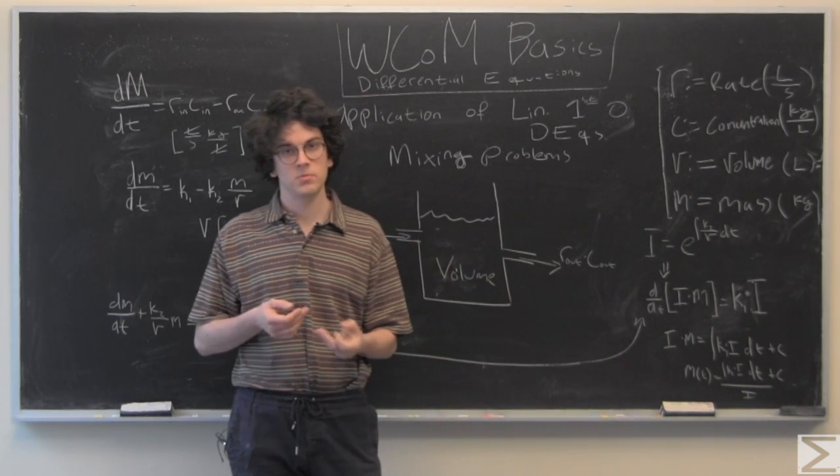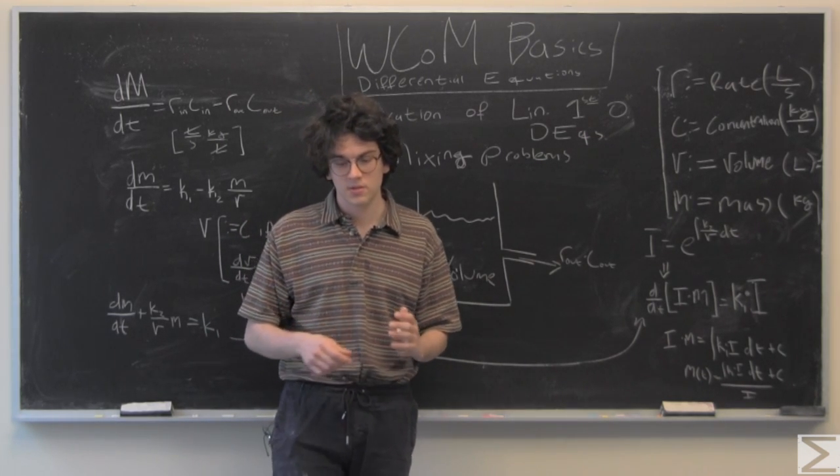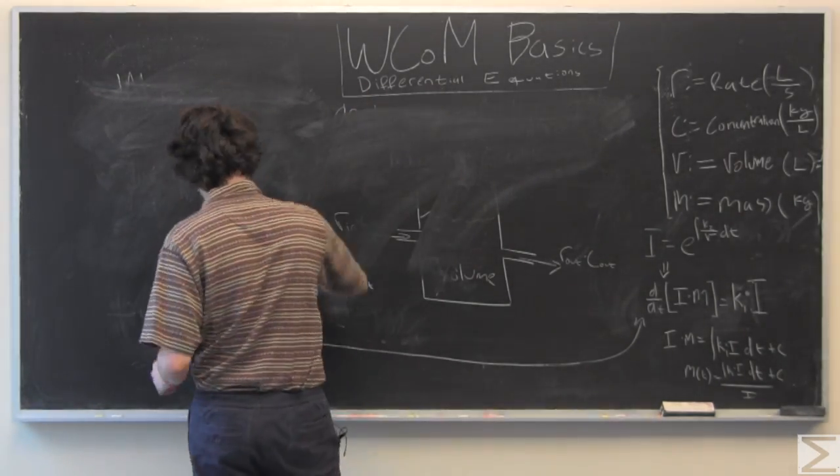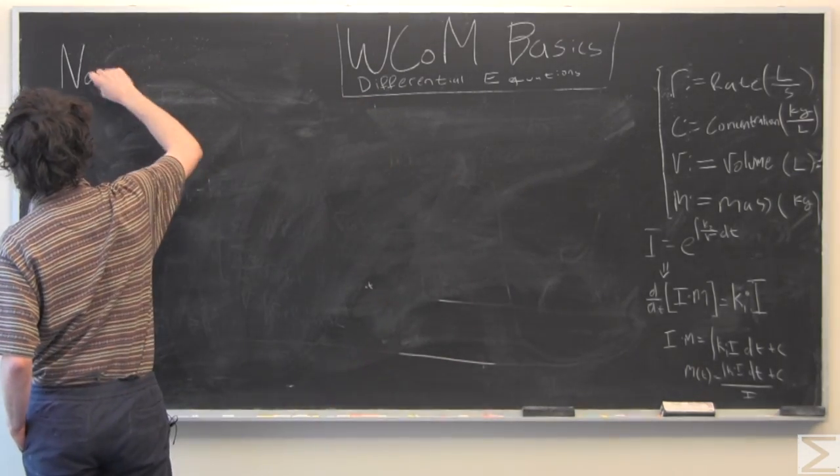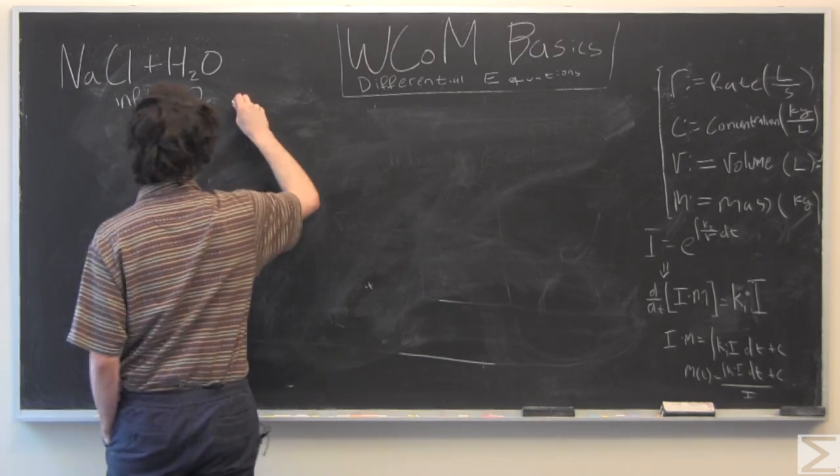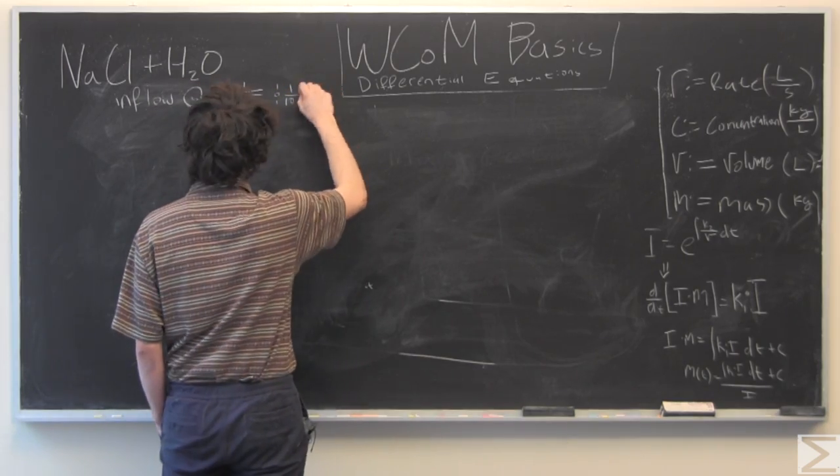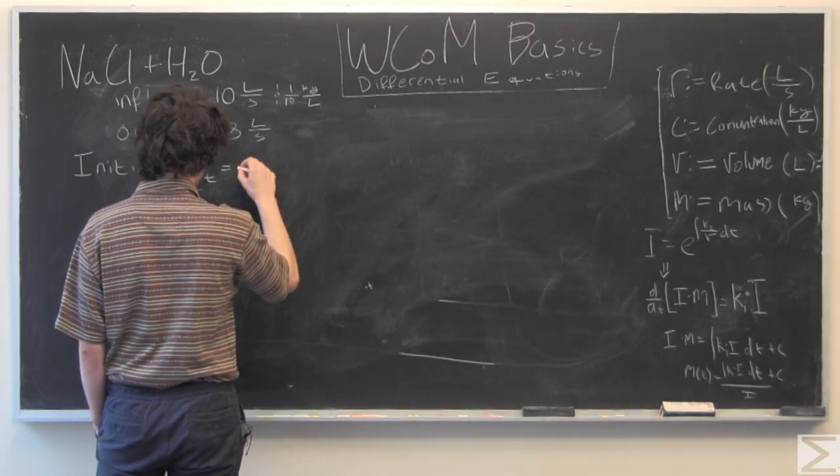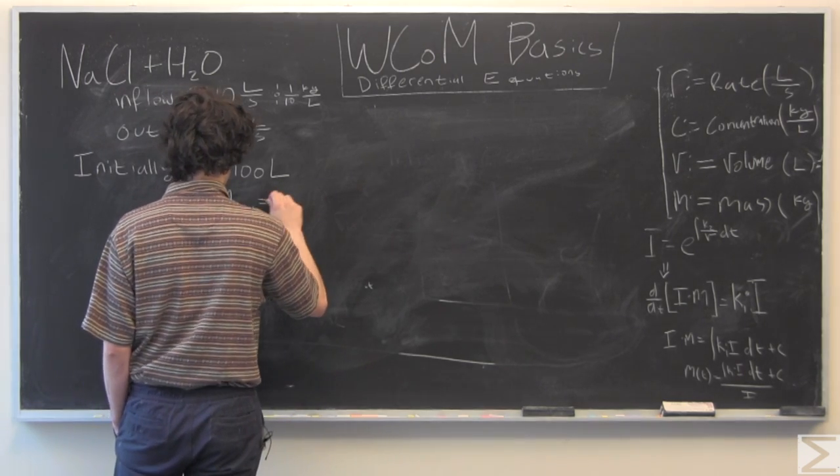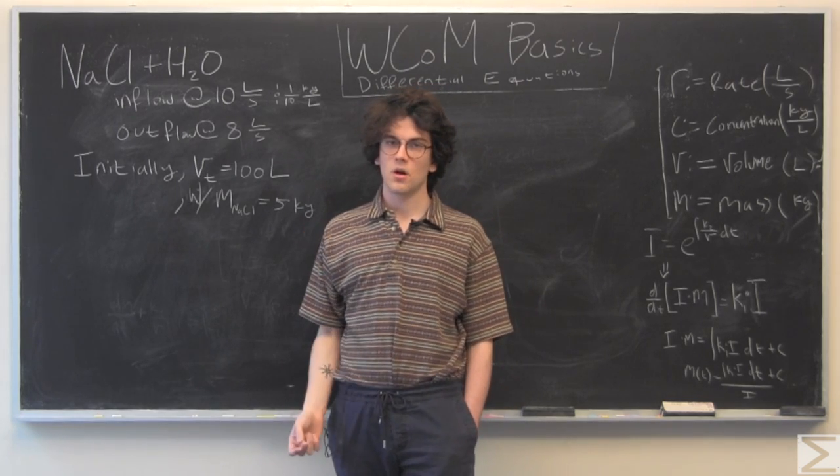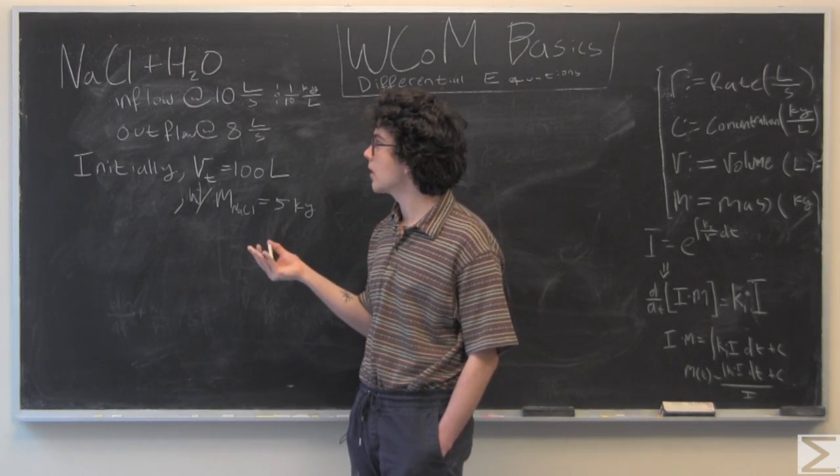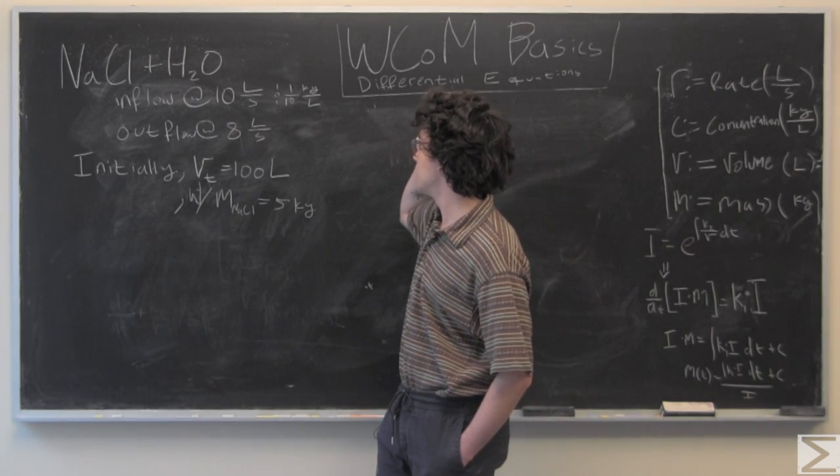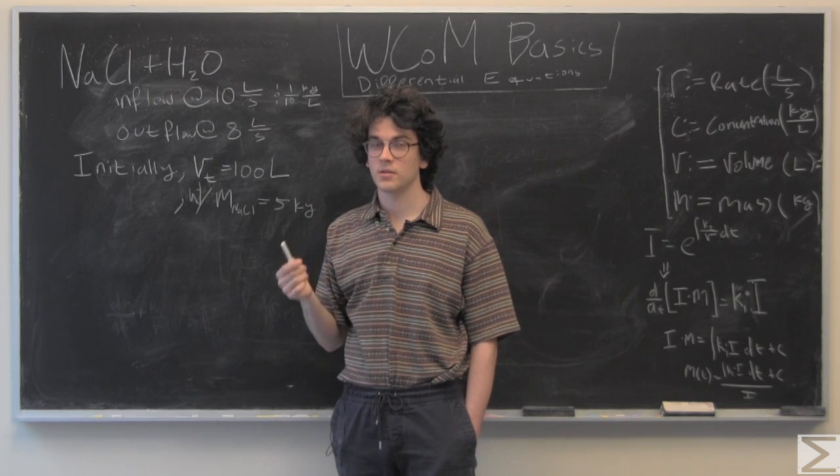So, that's all you need to solve mixing problems. I'm going to run through a quick example just to show you how to do it in practice. So, we have some solution of salt water, sodium chloride, plus dihydrogen monoxide coming in at 10 liters per second. And with a concentration of one-tenth kilogram per liter.